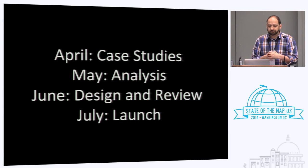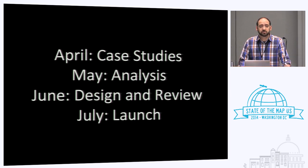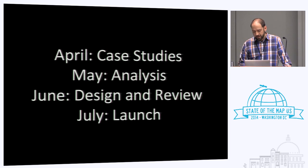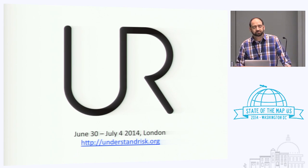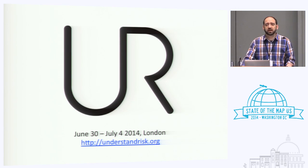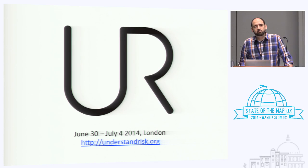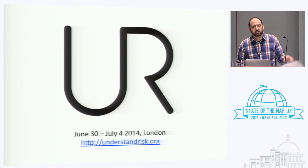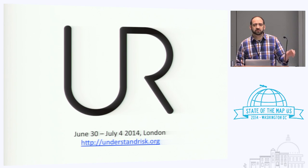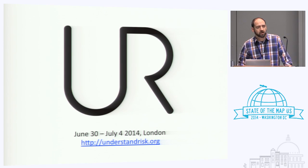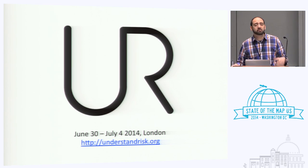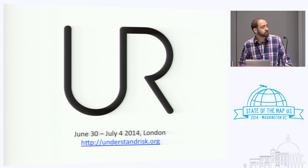We're still in the midst of collecting case studies through the rest of April. In May we'll put our heads down and do some writing. In June we'll send it out for review and do some design work, hoping to launch in early July at a conference called Understanding Risk — from June 30th to July 4th in London. About a thousand people are registered, from World Bank and partner governments to technology organizations, insurance companies, and satellite agencies. There will be sessions where OSM is featured, at least one training, and we're hoping to organize a mapping party one of the evenings with the local London OSM community.